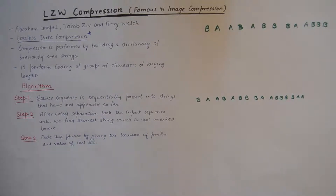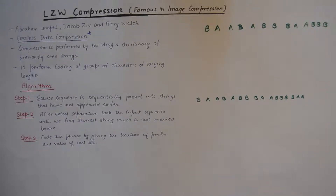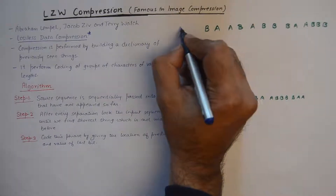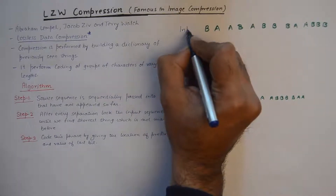The algorithm has three steps. The source sequence is sequentially passed into strings that have not appeared so far, and after every separation we look at the input sequence until we find a shorter string which has not been marked before. This will be made more clear when we solve an example. For example, we have an input string like this.